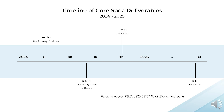The initial timeline of Core Spec deliverables spans 2024 and 2025. We aim to publish preliminary outlines for all specification areas in Q1 2024, submit preliminary drafts for formal review around Q3 2024, publish revisions addressing feedback in Q4 2024, and iterate toward final ratification around Q3 2025. A future goal is to work with the ISO/IEC PAS submission process to allow international adoption and recognition of the Core Specification.